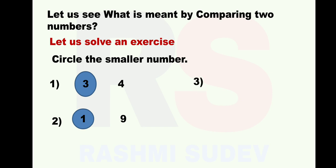Third sum: 2 and 20 are the given numbers. Tell me which is the smaller number. Yes, 2 is the smaller number.